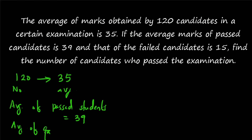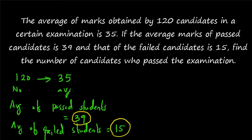The total average is given. The average of passed students and the average of failed students is also given, and the total average is also given. You have to find out the number of candidates who have passed the examination. When the passed students and the failed students are added together, you get the total number of students. The averages are given: average of the passed students, average of the failed students, and the total average.